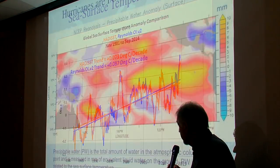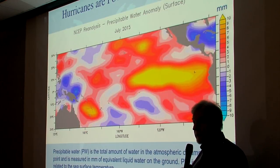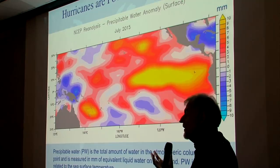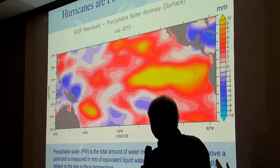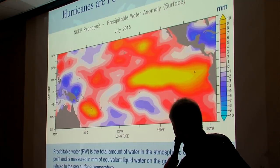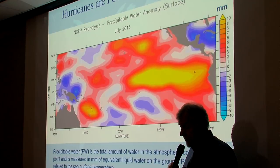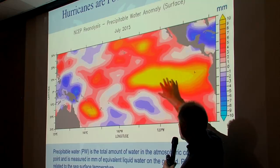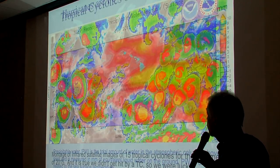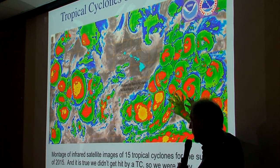That ocean warming has an impact because the dewpoint temperature above the ocean surface is determined by ocean temperature — dewpoint being a measure of how humid it feels. During the last El Niño in 2015 we had really humid weather in Hawaii, in part because of anomalously warm sea surface temperatures in the Pacific. That's a trend.